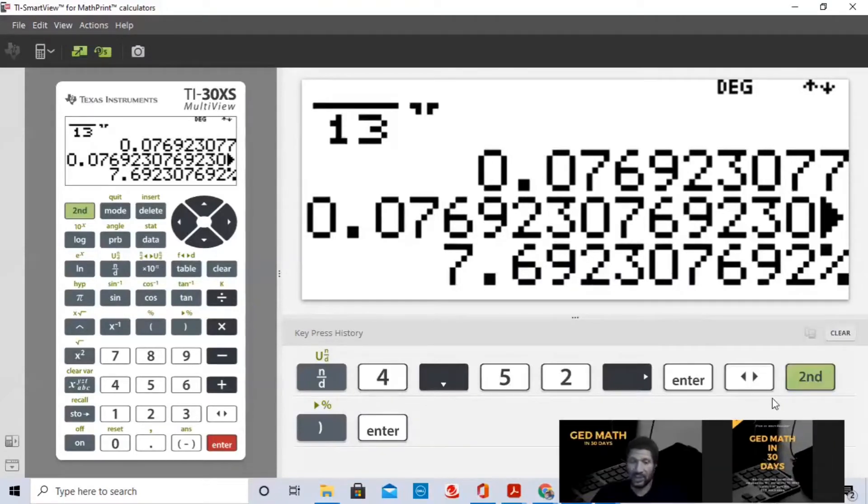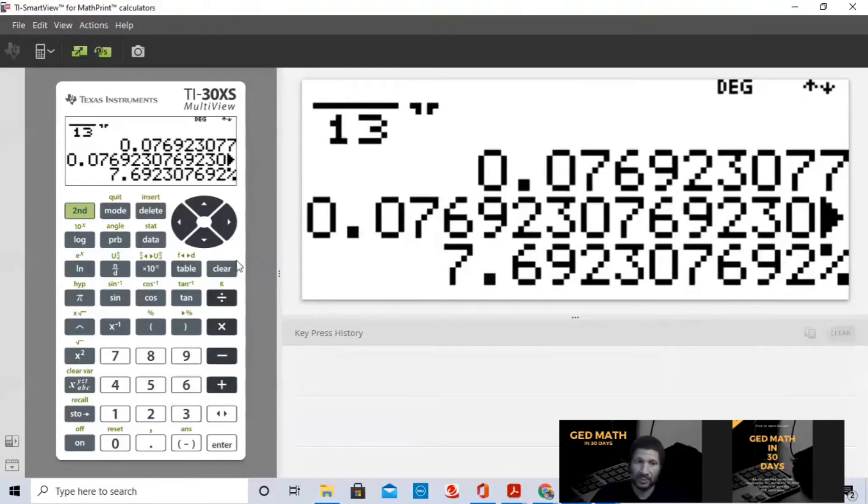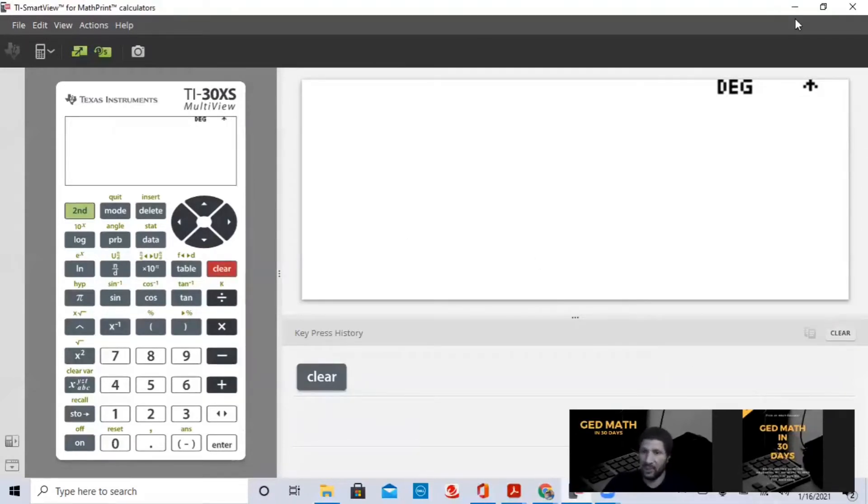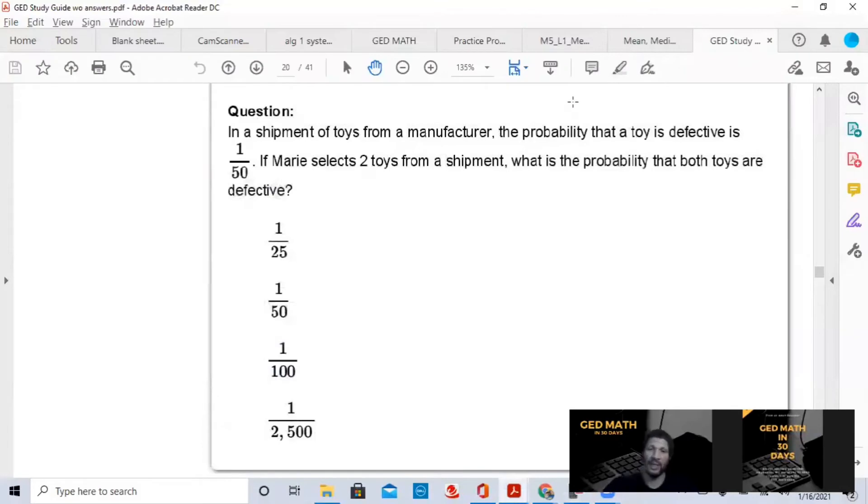Let me clear this out of the way so you can see all the key presses. Let me clear it. And now we're going to do that problem that you've seen previously. I'm going to minimize this. We're going to go back to the problem. In the shipment of toys from a manufacturer, that a toy is defective is 1 over 50. If Mary selects 2 toys from a shipment, what is the probability that both toys are defective?